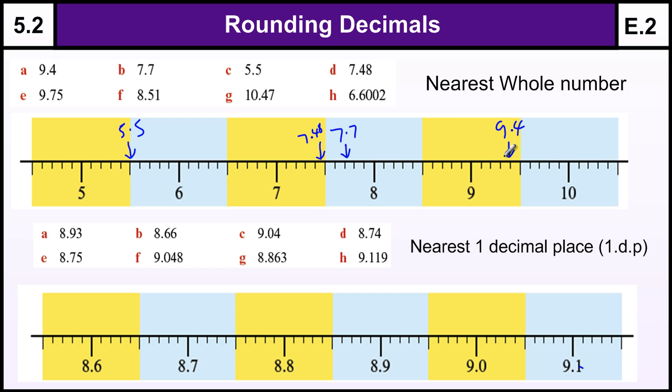Back to the 9.4. Now, round to the nearest whole number, which whole number is it closest to? Well the yellow and blue bands here can show you that it's closer to the number 9 than it is to the number 10. If it's below halfway between the two numbers then we round it down, if it's above halfway we round it up, if it's exactly on halfway the convention is we round up.